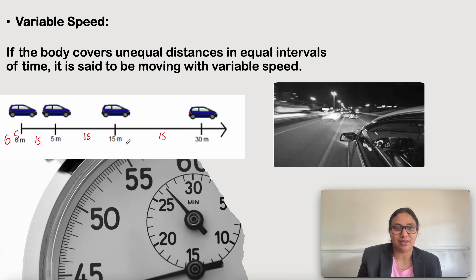If an object travels a distance s in time t, then average speed v is equal to distance traveled divided by time taken. The unit is meter per second. Let us solve one example here.